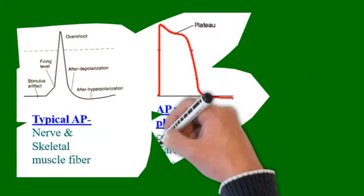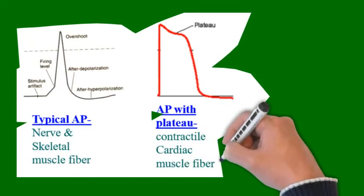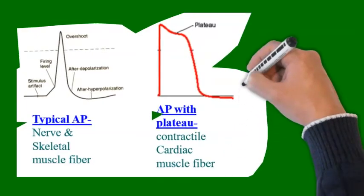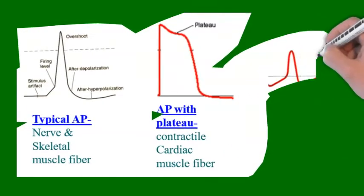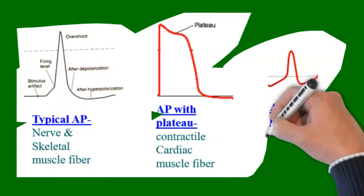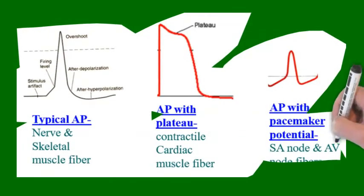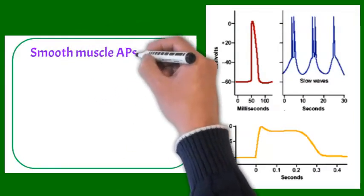in which overshoot is there but a spike is not there, is seen in contractile cardiac muscle fiber, while action potential with pacemaker potential and slow repolarization is seen in SA node and AV node.